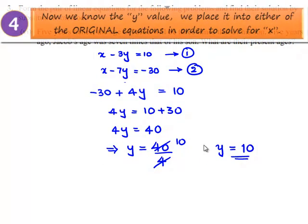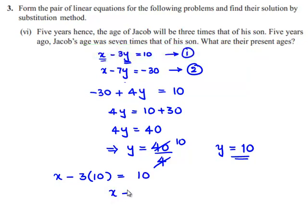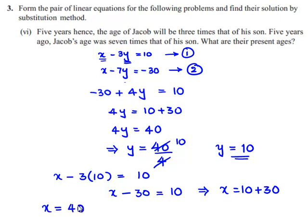Now to find the value of x, let us substitute y equals 10 in equation number 1. We get x minus 3 times 10 equals 10, so x minus 30 equals 10. That implies x equals 10 plus 30, which is 40. Therefore x is equal to 40.